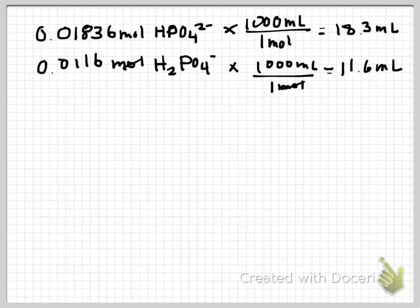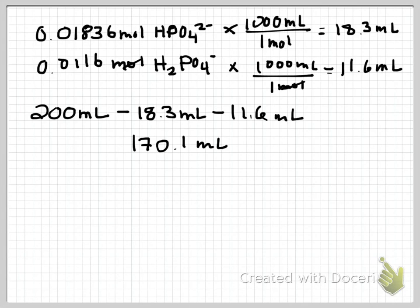Then you need to add DI water to get to your final volume. So our final volume was 200 mL minus 18.3 mL minus 11.6 mL, and so you need to add 170.1 mL of DI water.